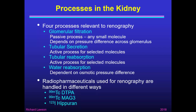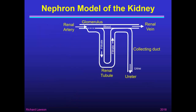We need to look at how different radiopharmaceuticals used for renography are handled, because they're handled in different ways. We're going to talk about technetium-99m labelled DTPA, technetium-99m labelled MAG3, and I-123 labelled Hipuran. Looking at our nephron model: blood comes into the renal artery and passes out through the renal vein, and at the glomerulus, filtrate can pass down into the renal tubules, down the loop of Henle, back up to the distal tubule, and down into the collecting ducts, coming out in the urine through the ureter.